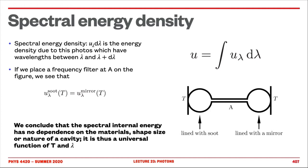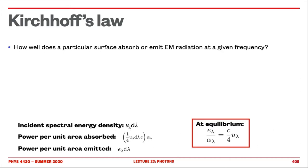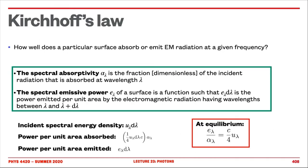Before we go there, let's think about Kirchhoff's law, which is going to bring us closer to where we want to be before we move to the statistical mechanics distribution. Now that we know the internal energy in a cavity is universal — U only depends on temperature, and U_lambda only depends on temperature and wavelength, not on the material — we can ask: how well does a particular surface absorb or emit electromagnetic radiation for a given wavelength? For that, we introduce the spectral absorptivity alpha of lambda, which is just the fraction of incident radiation that's absorbed at wavelength lambda.